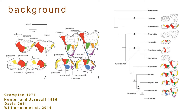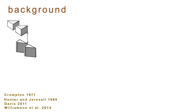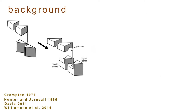Traditionally, the Tribosphenic Molar is treated as the homologous starting point, or an initial blueprint, for marsupial and placental mammals, with subsequent adaptive gains and losses of cusps and other features in various clades. Gaining or losing a dental cusp alters the occlusion of the upper and lower molars with potentially substantive influences on function.